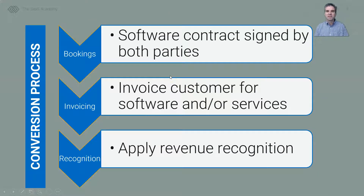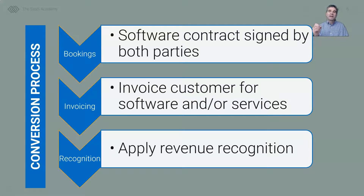Typically in SaaS, we have a conversion process. First we have a booking — a signed software contract by both parties, an executed contract to deliver goods or services. Then based on that contract and the payment terms, we invoice the customer for the software and our services. Remember, at this point we do not have revenue yet. We then have to apply revenue recognition — can we recognize that revenue instantly when we invoice the customer, or do we have to apply some framework, for example, recognizing the revenue over time, which is common within SaaS companies.